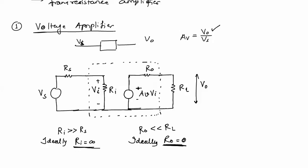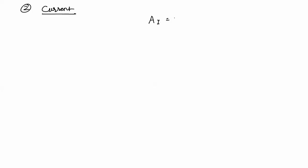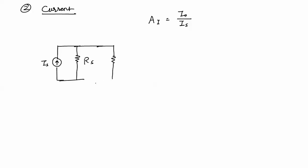These input and output impedance conditions are asked in the GATE examination. The second amplifier is the current amplifier. In the current amplifier, input is in the form of current and output is also in the form of current. The current gain is the ratio of output current to input current.